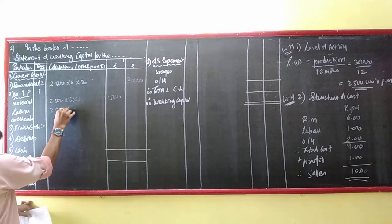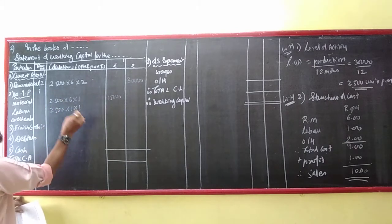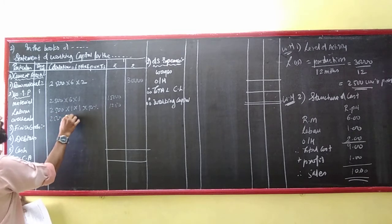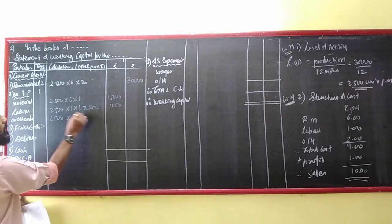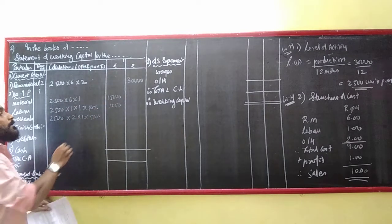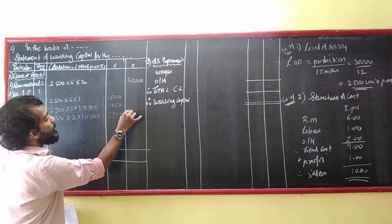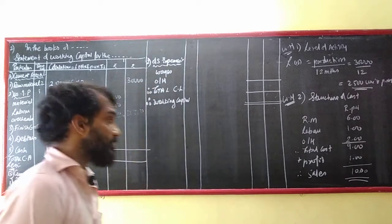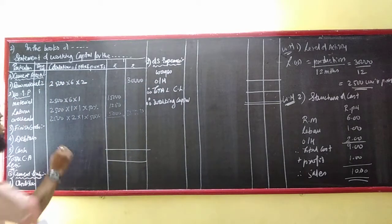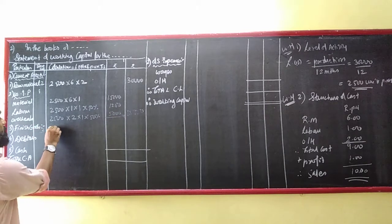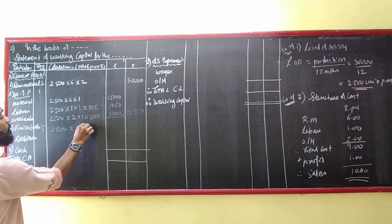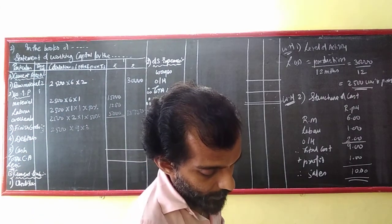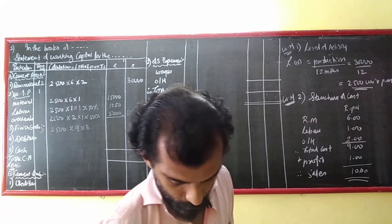For overheads in WIP: 2,500 units into overhead of 2, into time lag of 1, into 50% equals 2,500. For finished goods: 2,500 units into total cost of 9, into 3 months equals 67,500.